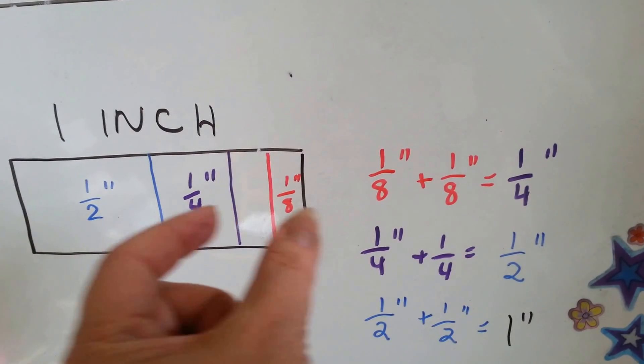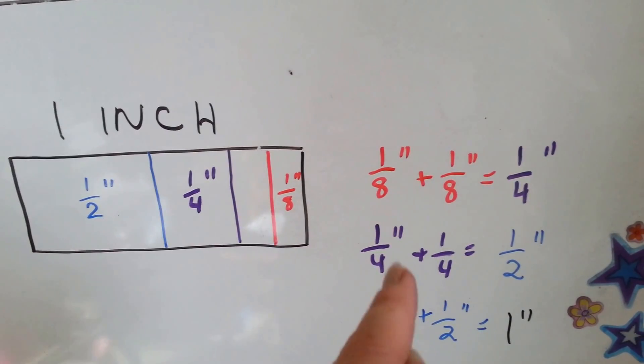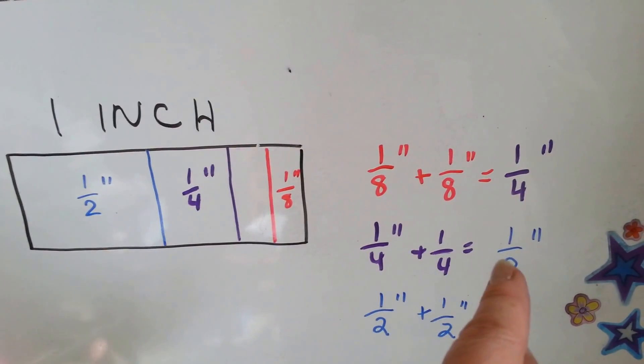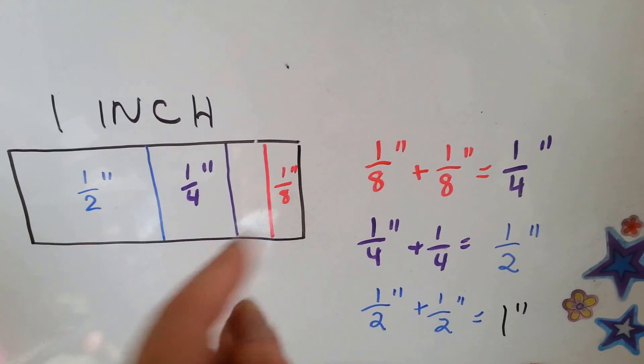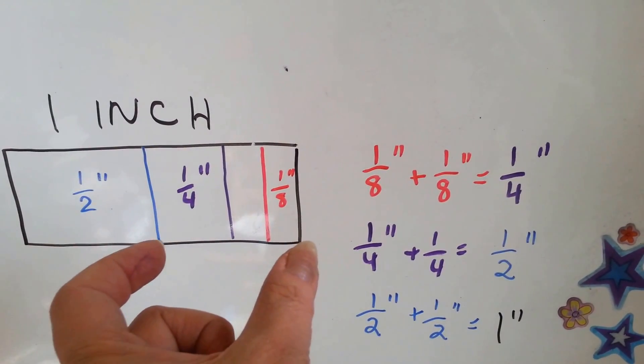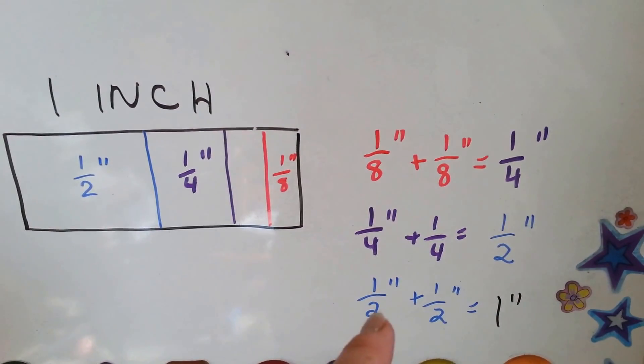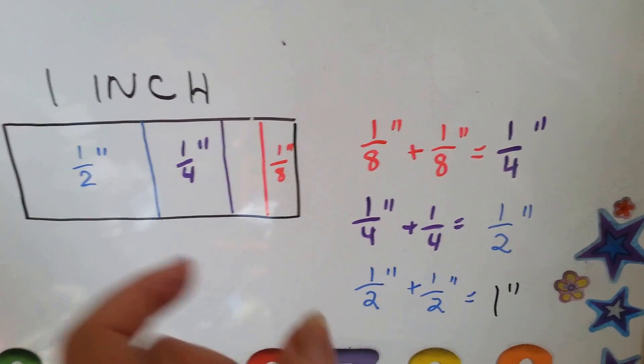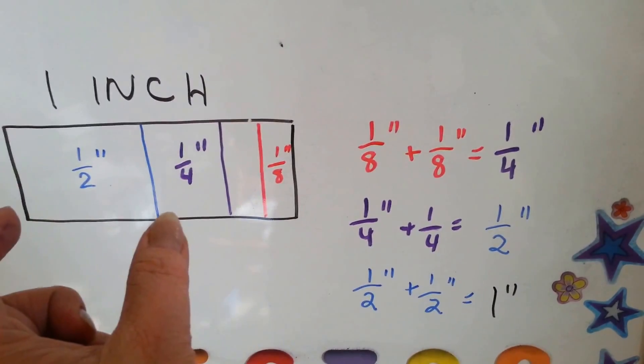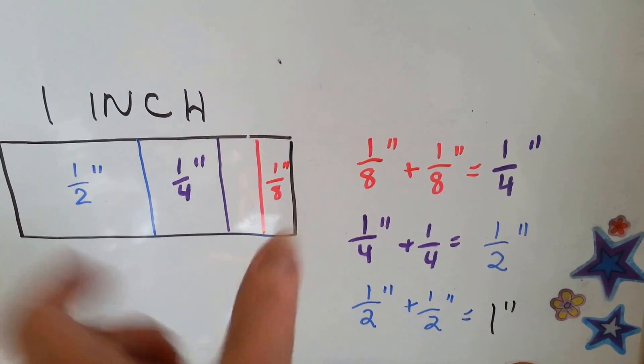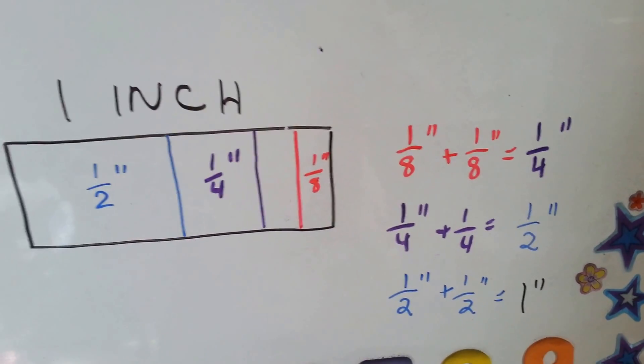An eighth and an eighth is the same size as a fourth. A fourth and a fourth is the same size as a half. And a half inch and a half inch is equal to one whole inch.